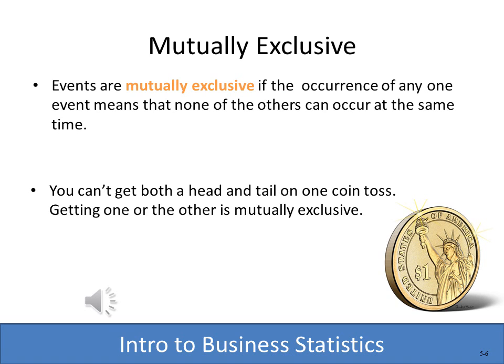Another important term to understand when dealing with probability is mutually exclusive. Mutually exclusive means you can only have an occurrence of one event — if you have one, you can't get the other at the same time. For example, if you throw a coin, you can't get both a head and a tail; you can get one or the other. They are mutually exclusive.